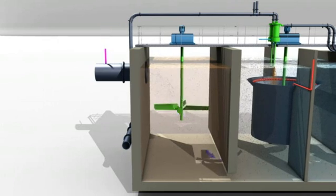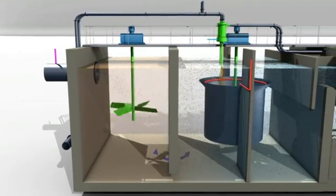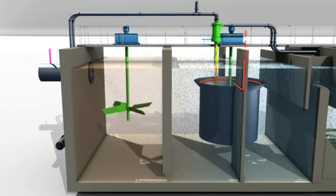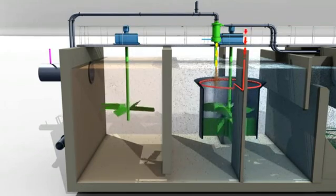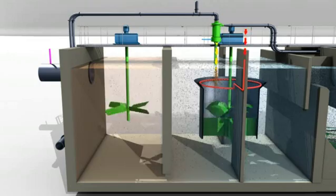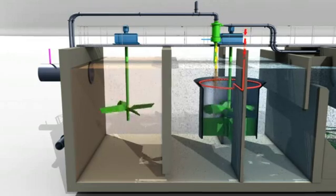The coagulated water then enters the turbomix flocculation tank, in which microsand and polymer are added. The turbomix draft tube is designed to ensure intimate mixing, in which flocks are attached onto the surface of microsand with the help of polymer.